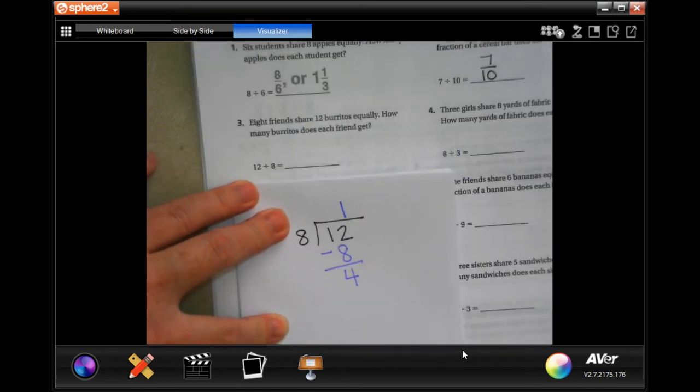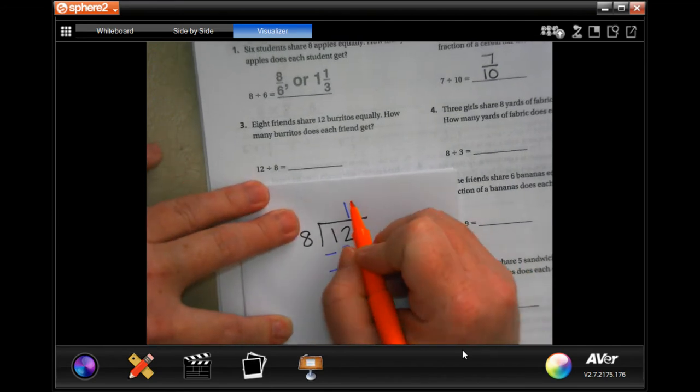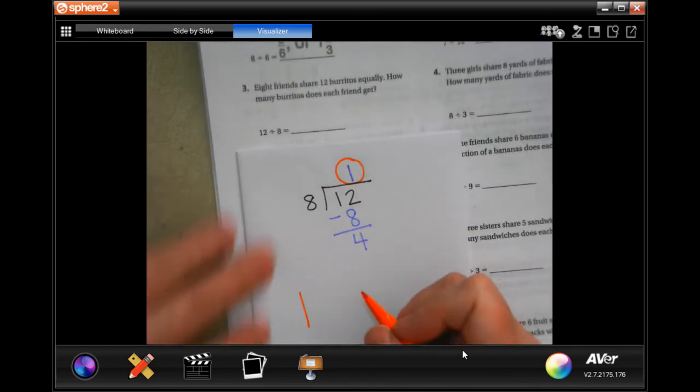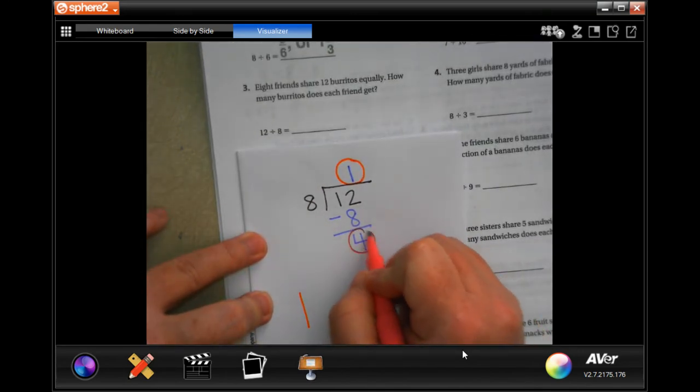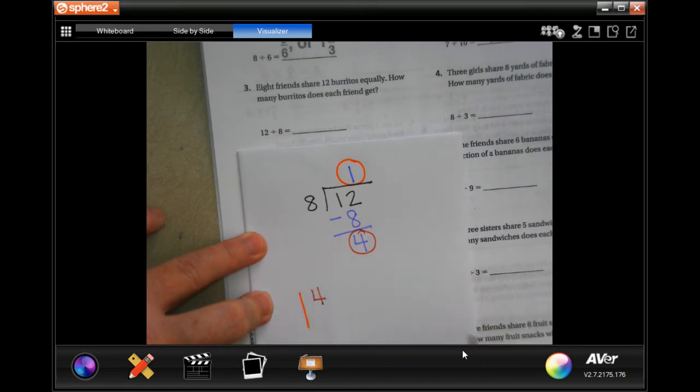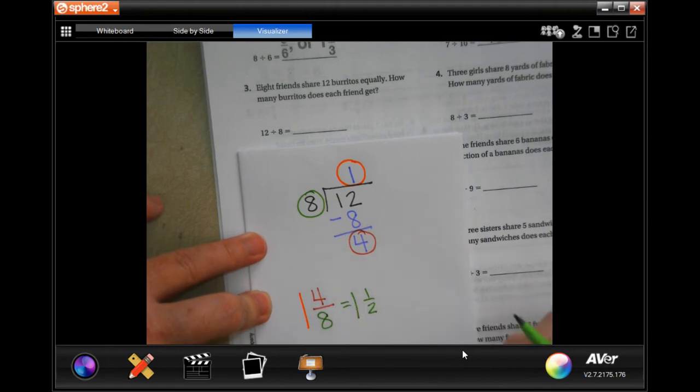Now I'm going to show you how I'm going to get my numbers. One is my whole number. Four is my top number and eight is my bottom number. Now four eighths is equal to one half, so it's going to be one and a half.